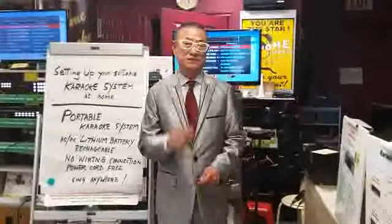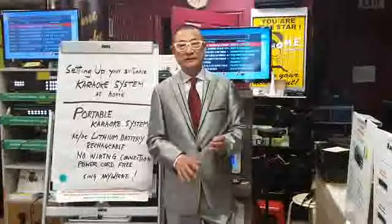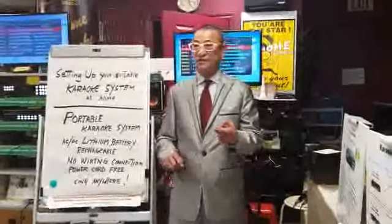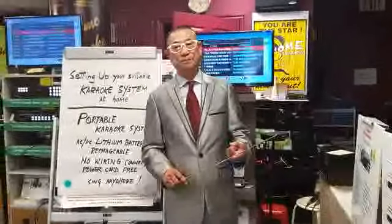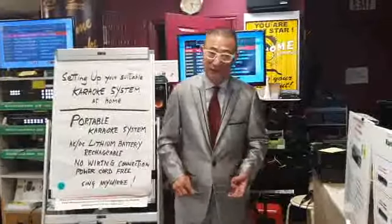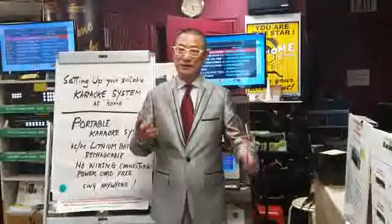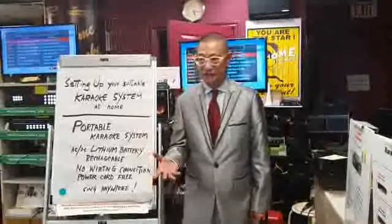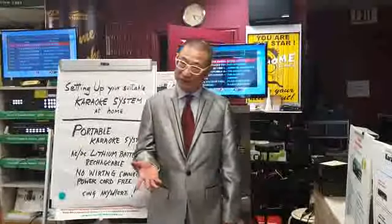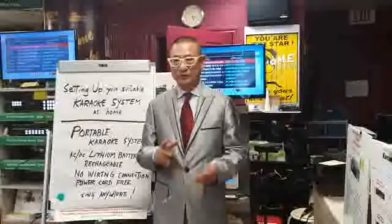Setting up a karaoke system involves three component units that are connected together as one system. Component number one is the karaoke machine, number two is the amplifier speaker, and number three is the microphone — which can be a corded microphone, a cordless microphone, or a headset wireless microphone.